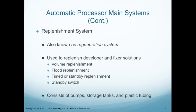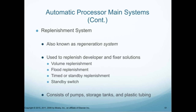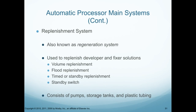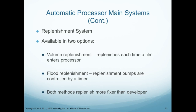The replenishment system, also known as the regeneration system, is used to replenish the developer and the fixer. It replenishes the volume of fluid — flood replenishment, timed or standby replenishment, and standby switch — all used to replenish the fixer and developer. It consists of pumps, storage tanks, and plastic tubing. Volume replenishment replenishes each time the film enters the processor; flood replenishment has replenishment pumps controlled by a timer. Both methods replenish more fixer than developer.